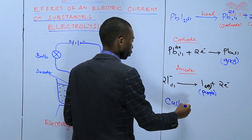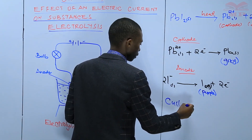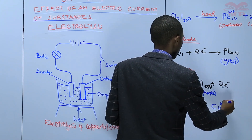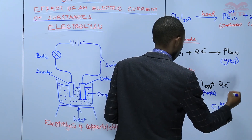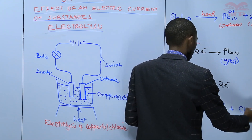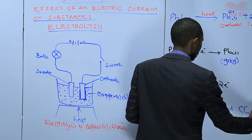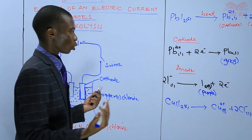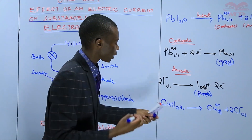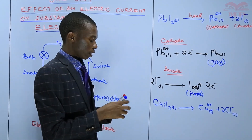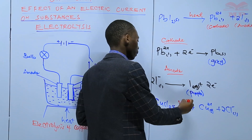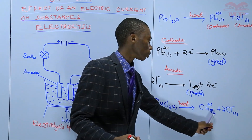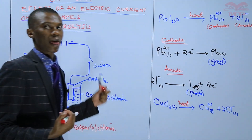The copper(II) chloride solid, when heated, will have copper ions in liquid form and chloride ions also in liquid form. When copper(II) chloride is heated, the electrostatic forces are weakened and you will have a liquid of copper(II) chloride containing copper ions and chloride ions.